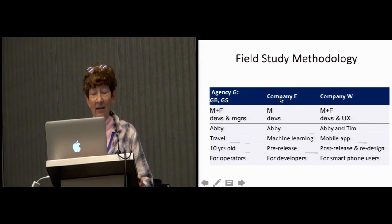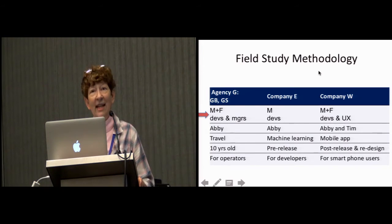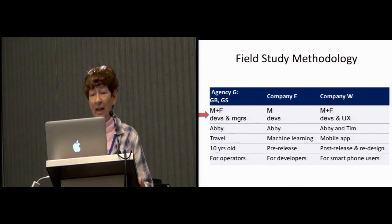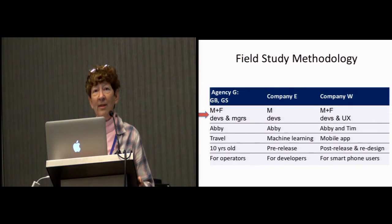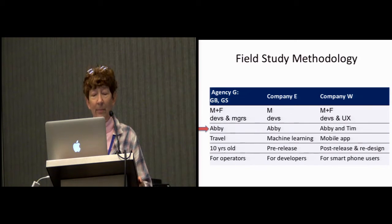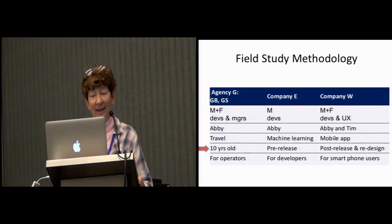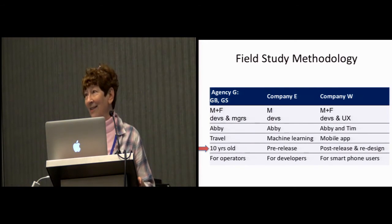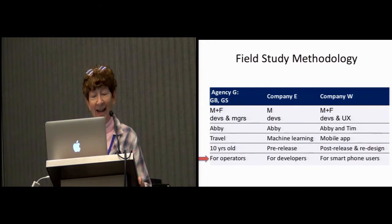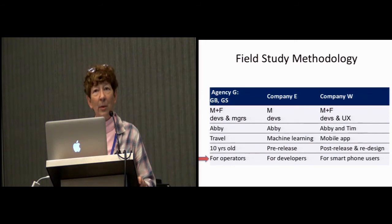So let's look briefly at our methodology. We had four teams scattered among three agencies, with a variety of people on these teams doing the evaluation work — not us, we were just paying attention. One team had both males and females, another had just males, and so forth. Their job titles included software developers on all teams, and some also had managers and UX people. They used mostly Abby, but one team also used Tim. The software domains ranged from travel to a mobile app, the software life cycle ranged from 10 years old to pre-release, and the envisioned users of the software were also very different.